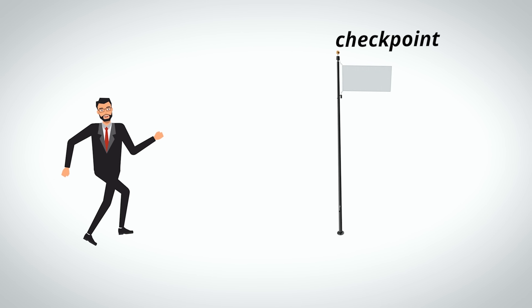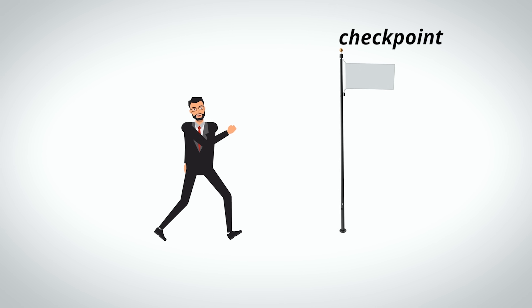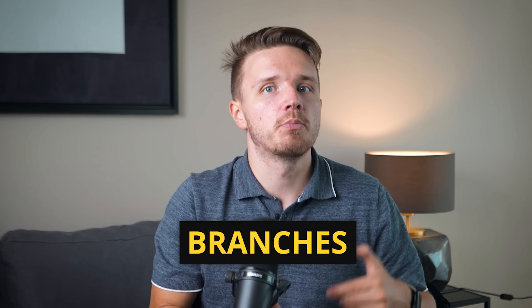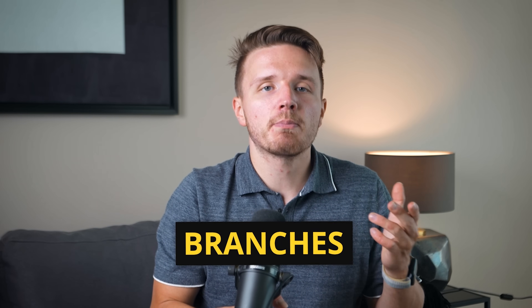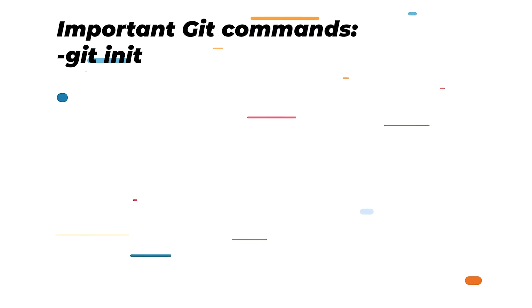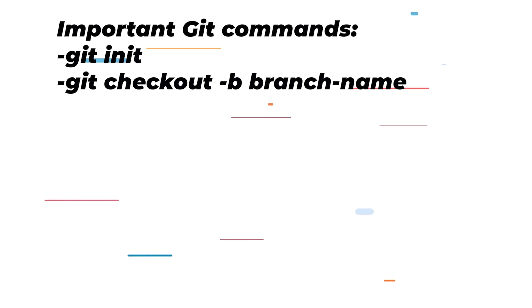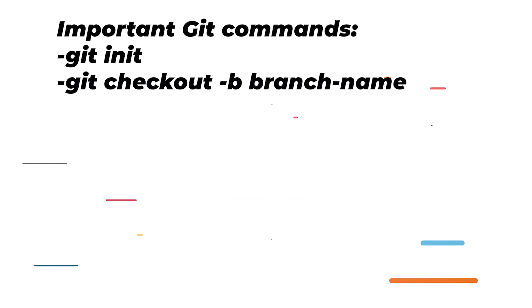But you aren't sure if that new component will make sense yet. What you might like to do is save a checkpoint — the current state of your website — so you can come back to it later if you decide you want to. Git allows you to do exactly this by creating something called branches. You can create a Git repository for a project by installing Git and calling git init. Then at any time, you can save these checkpoints by creating a branch using git checkout -b and the branch name, and your progress will be saved for you to come back to at any point.